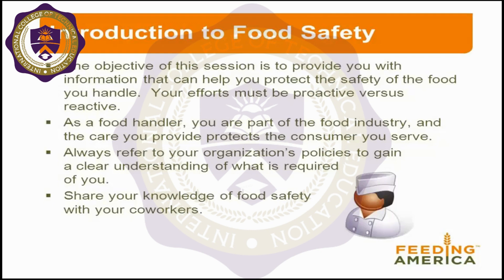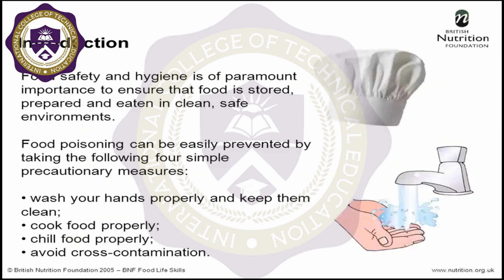In a hotel, the senior chef goes through and prepares the menus. Food safety and hygiene are of paramount importance to ensure that food is stored, prepared, and eaten in a clean, safe environment. Food poisoning can be easily prevented by taking four simple precautions: wash your hands properly and keep them clean, cook food properly, chill food properly, and avoid cross-contamination.